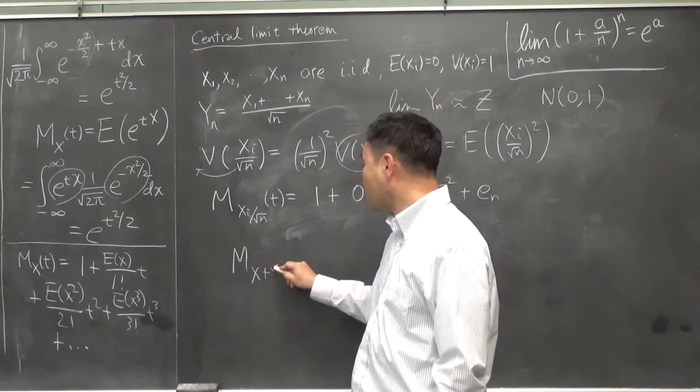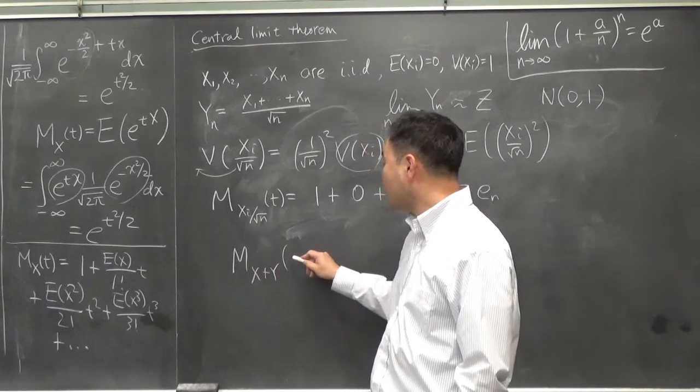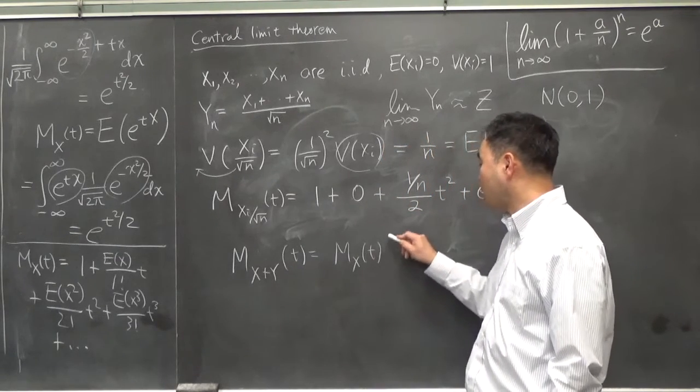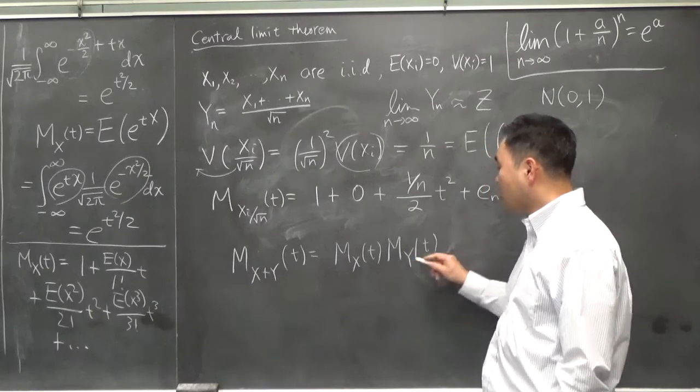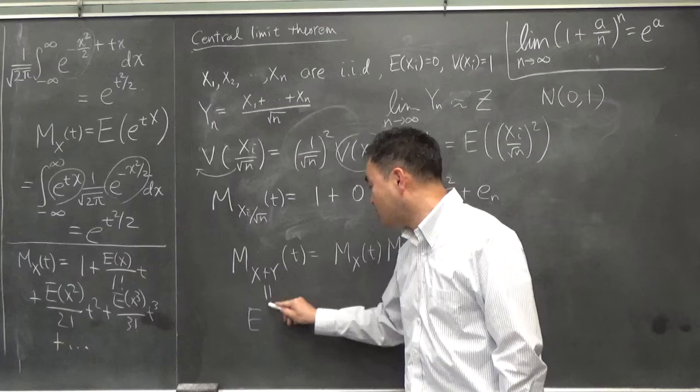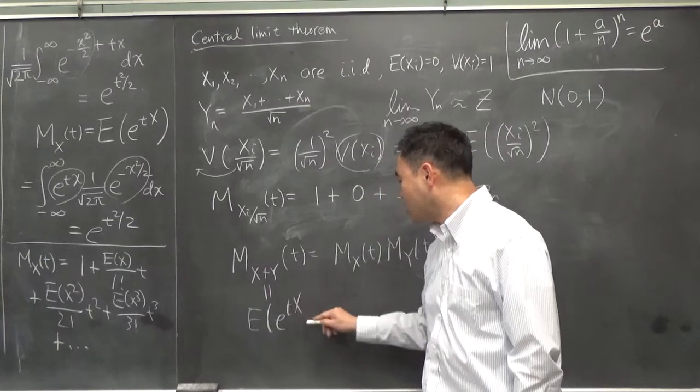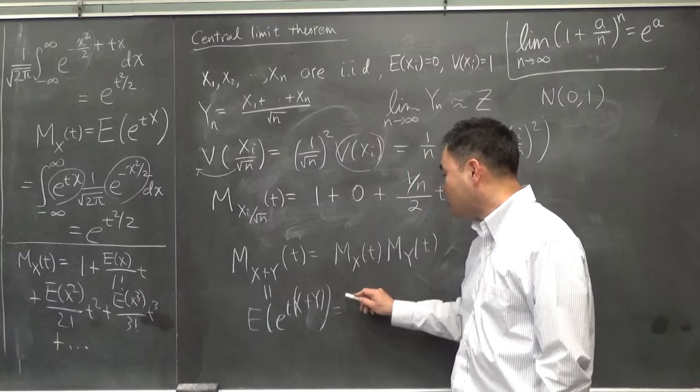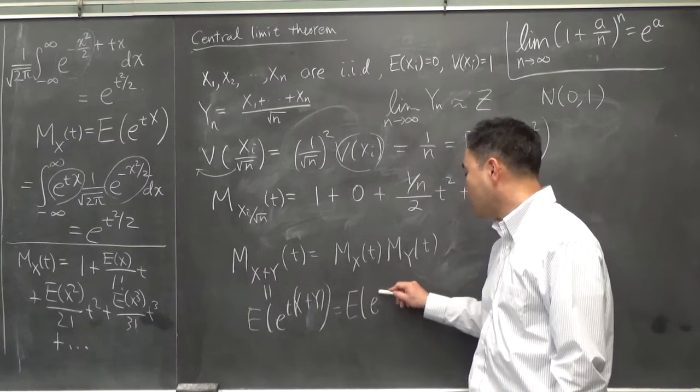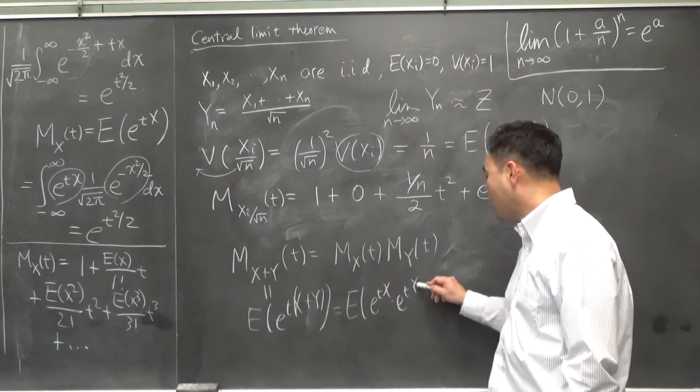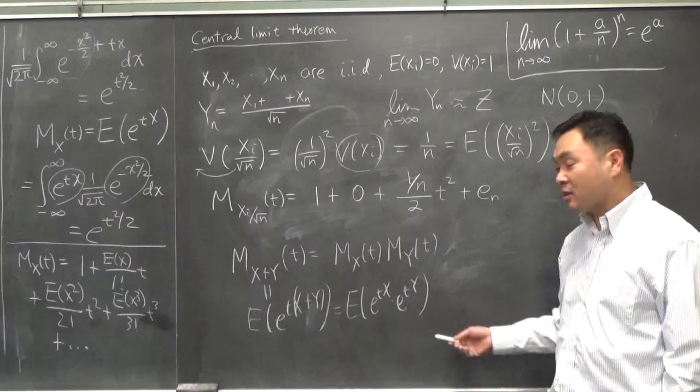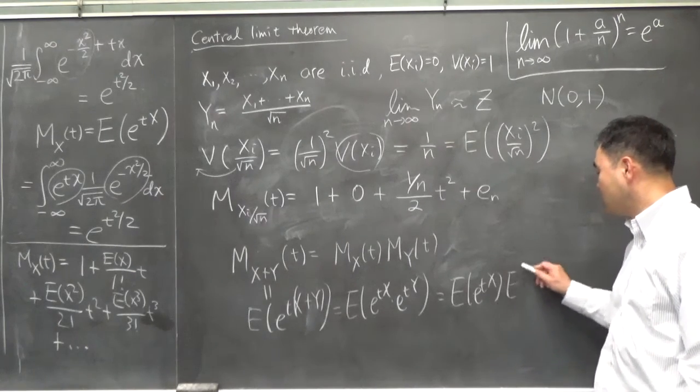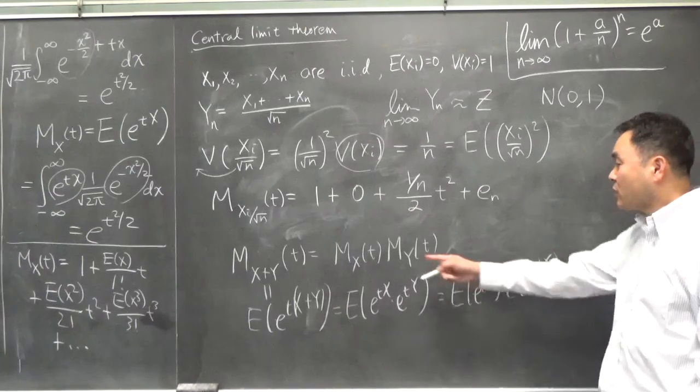We're only looking at this moment-generating function very close to 0. And moment-generating functions have the following property that if you have X plus Y, two random variables, if they're independent, then this is same as moment-generating function of X times moment-generating function of Y. Well, that's because this, by definition, is E(e^{t(X+Y)}). But then that's same as E(e^{tX} × e^{tY}). And since these two are independent, this splits into two. So that's why this is true.